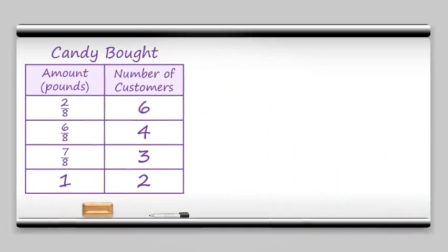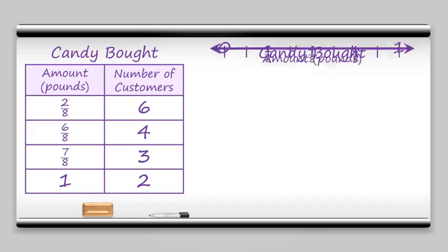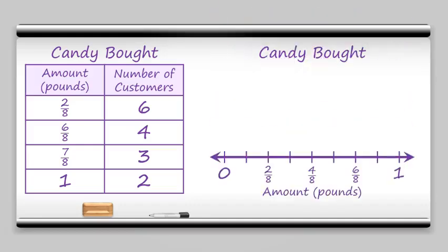It's nice to give your line plot a title. The same title as our table will be just fine. The most important part of our line plot is the number line, which in our case will tell us the amount of candy that customers bought. The number of customers is the frequency. Those are the values that go above the number line.